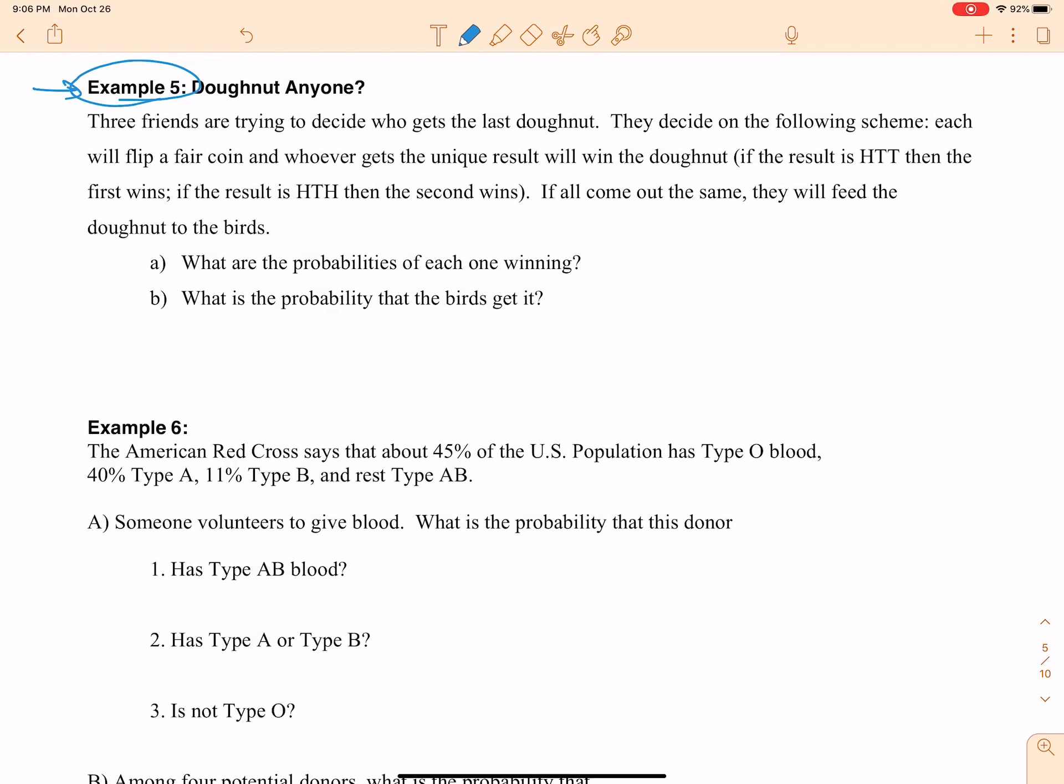So we've got three friends and they're trying to decide who gets the last donut. They decide to follow the following scheme. Each one will flip a fair coin and whoever gets the unique result, that means like one tail and two heads or one head and the other two get two tails. Whoever gets the unique result will win the donut.